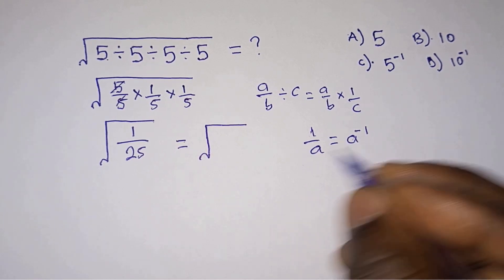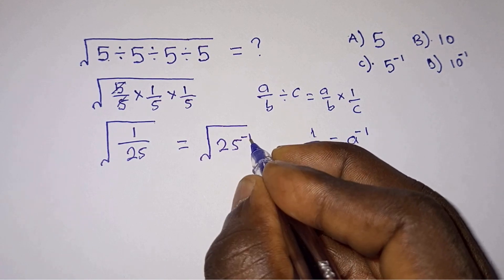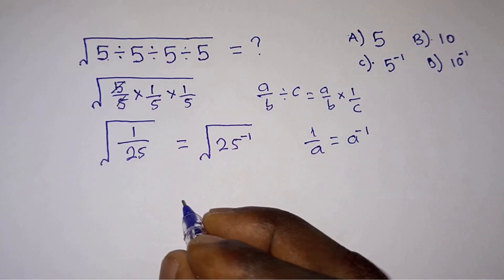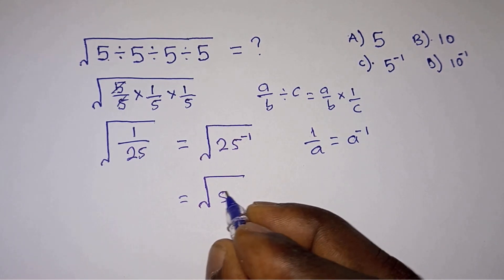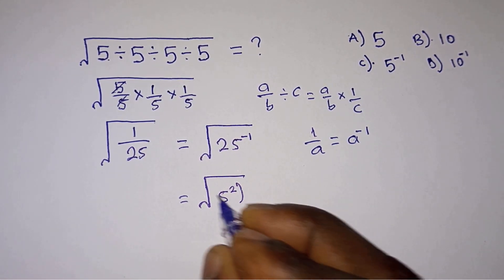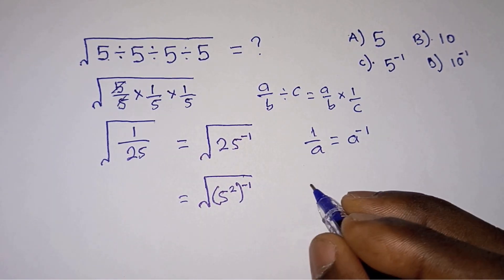Now if you have 1 over a, it is the same as a to the power minus 1. So this will be 25 to the power minus 1. But we know that 25 is the same as 5 squared, then all to the power minus 1.